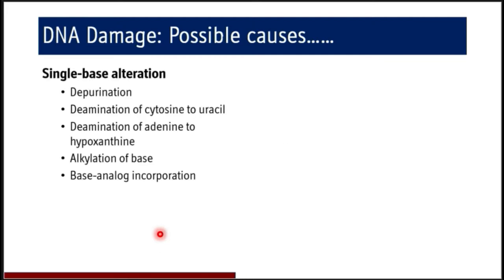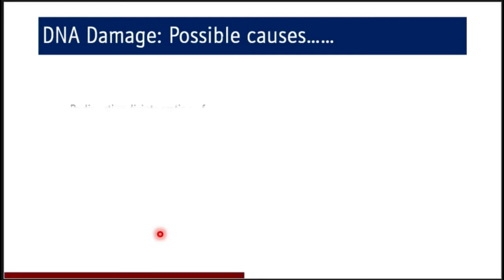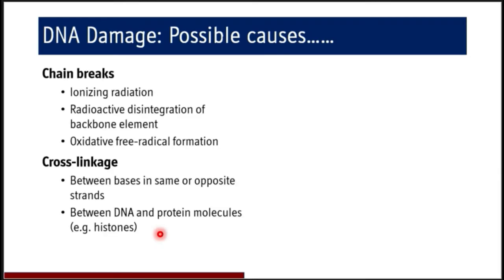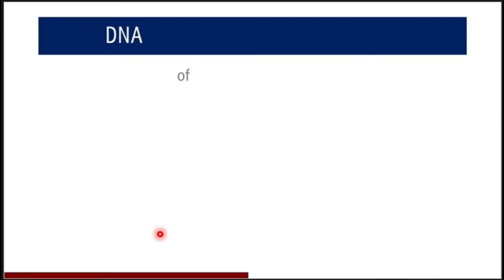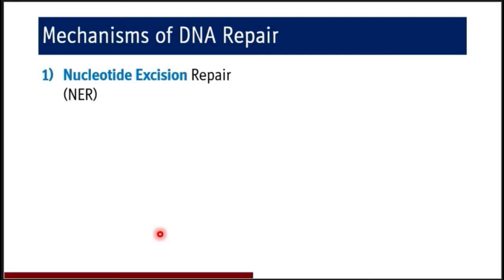To summarize the possible causes of DNA damage: single base alteration, two-base alteration, chain breaks, cross-linkages, and certain chemicals which interact with DNA. Now let us see the possible mechanisms of DNA repair which can correct DNA damage. They include nucleotide excision repair and base excision repair.